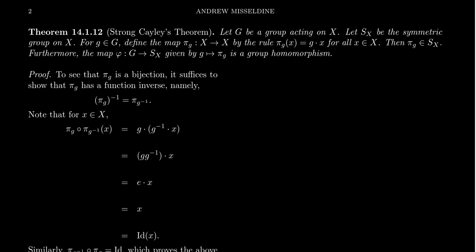Furthermore, the map φ from G to S_X — which S_X is a group — identifies an element g of the group G with its permutation π_g, and this is in fact a group homomorphism. So with respect to any group action, we have a homomorphism from a group to a symmetric group. In the case of Cayley's theorem, we have the regular action, and this homomorphism will be one-to-one, so we're isomorphic to a permutation group. But in general this could be just a homomorphism, where two different group elements act the same way. This is the very beginning of what's called representation theory — we can represent any group as a permutation action.